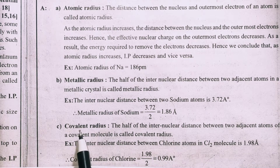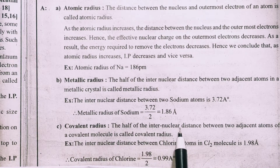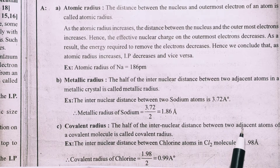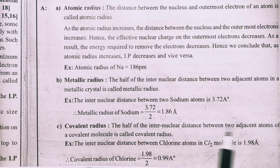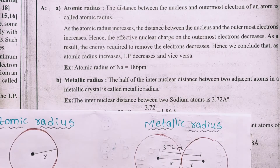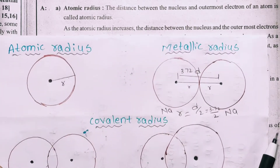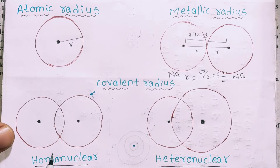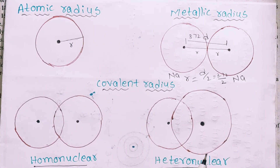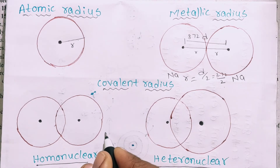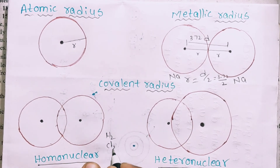Next, covalent radius. The half of the internucleus distance between two adjacent atoms of a covalent molecule is called covalent radius. In the case of covalent molecules, homonuclear atoms — meaning same atoms — are one type, and heteronuclear atoms are another. For example, homonuclear: H₂, Cl₂.